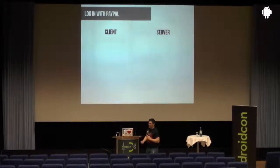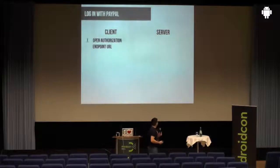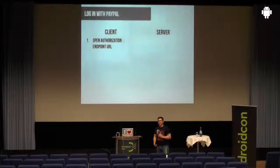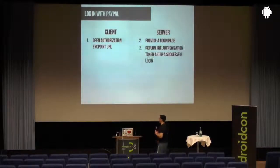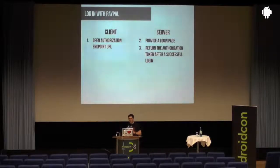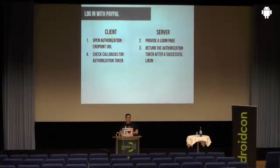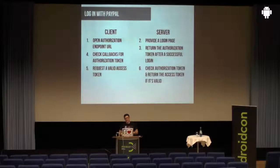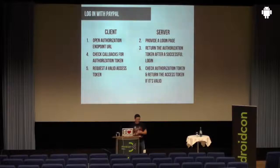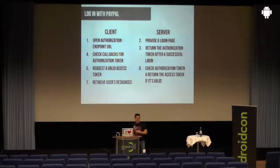There's a very quick and easy flow for this. You have an authorization URL, you open it, a login page is provided, you enter your data, and there's an authorization token. Your client checks if the authorization token is valid, then you send it to the server. The server verifies it's still the existing token, and you get an access token — that's enough to request resources.